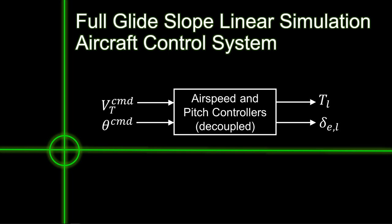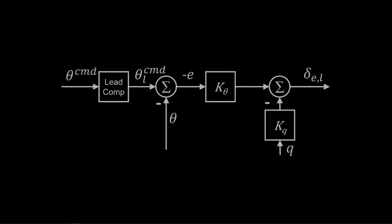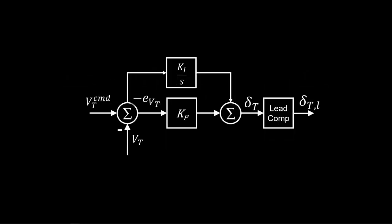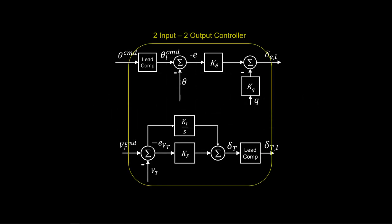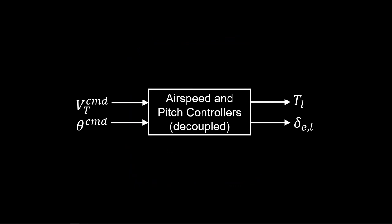We start with the combined airspeed and pitch controller. Here's the pitch angle controller with the lead compensator, and here's the airspeed controller with its lead compensator. Combined, we have a two-command input, two-control output control system with three feedback channels: theta, q, and VT. This block represents their decoupled combination with airspeed and pitch angle command input and throttle and elevator command output.